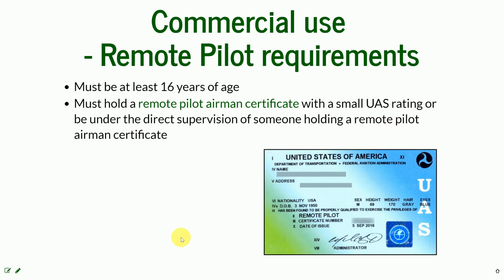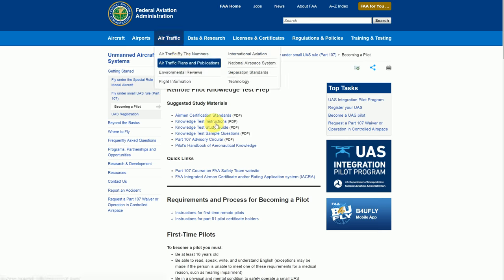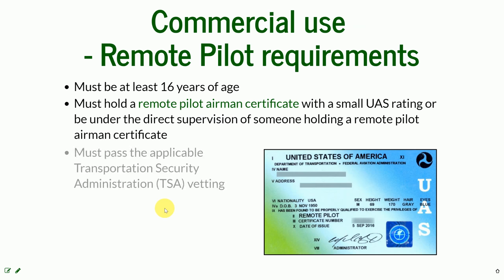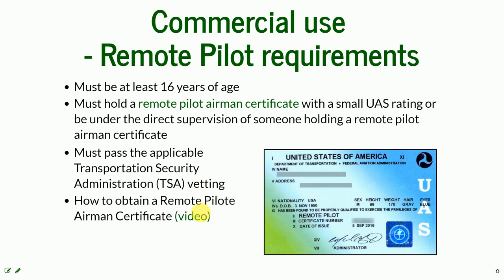To obtain the remote pilot airman certificate, more information is available under a linked FAA webpage where you can see the certification standards, test instructions, and quick links for all those who want to obtain the Part 107 certification. You should also expect to be required to pass TSA vetting. There is also a short two-minute YouTube video where a person from the FAA explains the entire process of obtaining the remote pilot airman certificate.